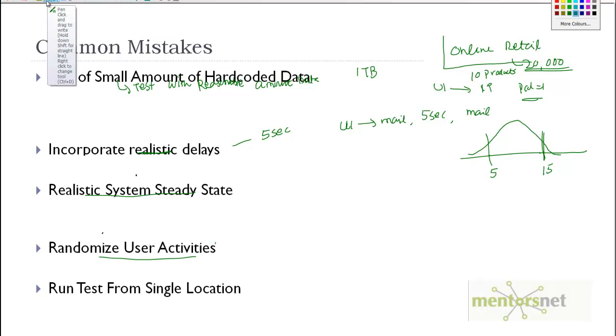Finally, a lot of people run tests from a single location. That's a problem because nowadays with the web and all those things, your user can be from any geography. Whenever you test, ensure that you also simulate similar kinds of things. For example, user 1 to user 50 are from one geography - let's say from US West.